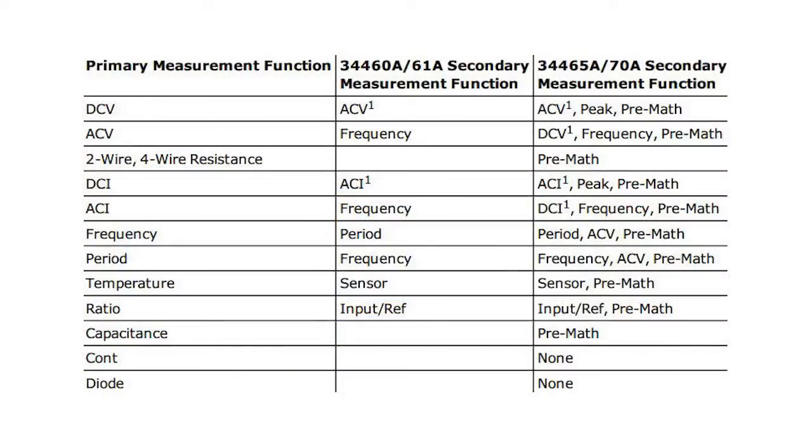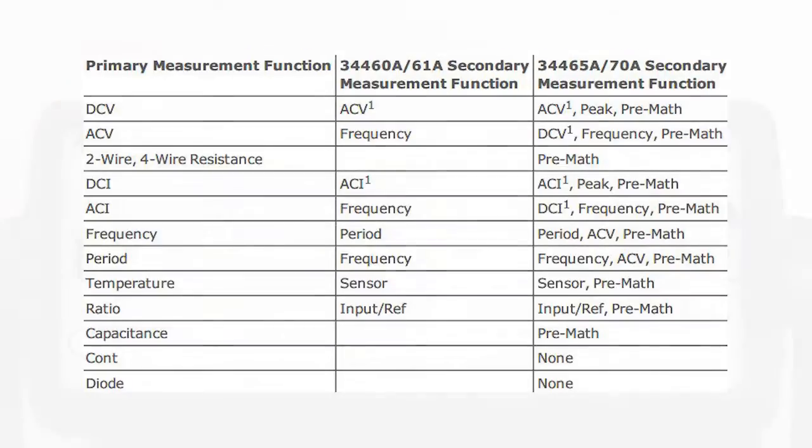Shown here are the complete list of primary and secondary measurement functions available with the TruVault family of DMMs. For example, for a primary measurement function of DCV, you have available as secondary measurements ACV, peak, and pre-math.